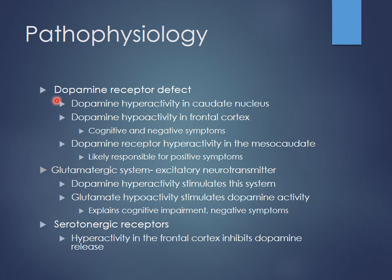One of the big things we're seeing is that there's probably some sort of dopamine receptor defect — too little or too much transmission depending on where you are in the brain. Some people feel that a lot of the cognitive and negative symptoms come from dopamine hypoactivity in the frontal cortex. So schizophrenia isn't just too much dopamine — there's hypoactivity in some areas like the frontal cortex. First-generation antipsychotics don't help much with negative symptoms; they help more with positive symptoms.